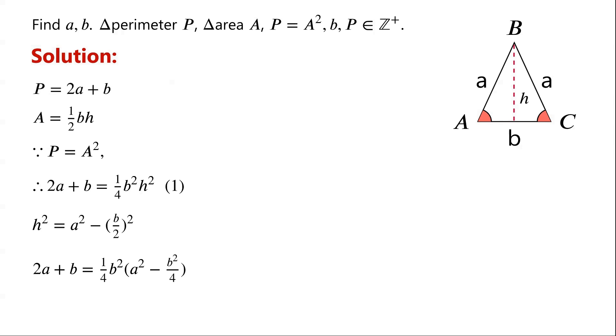Then multiply the equation by 16. We can now write 16 times 2A plus B equals B squared times 4A squared minus B squared. 4A squared minus B squared can be written as 2A plus B times 2A minus B. Then 2A plus B on the right side of the equation and that on the left side of the equation cancel. So we can now write 16 equals B squared times 2A minus B.